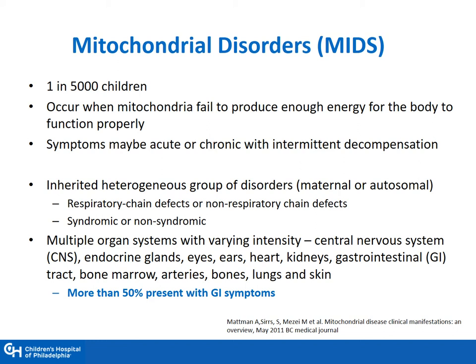What are mitochondrial disorders? They occur in about 1 in 5,000 children and happen when mitochondria fail to produce enough energy for the body to function properly. Symptoms may be acute or chronic with intermittent decompensation. Mitochondrial disorders are an inherited heterogeneous group of disorders that can affect the respiratory chain or not, and can be syndromic or non-syndromic. They affect multiple organ systems with varying intensity, and more than 50% present with GI symptoms.